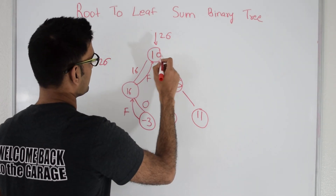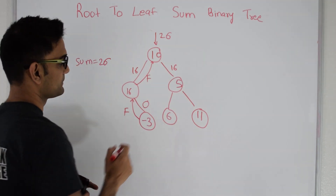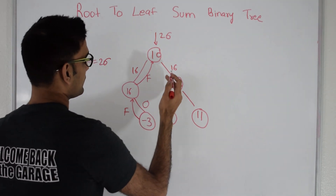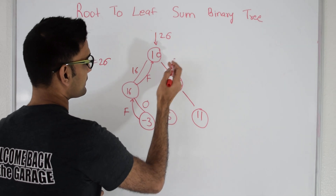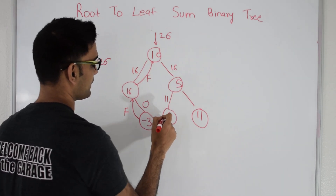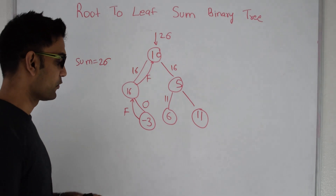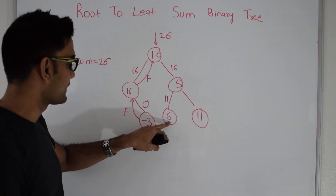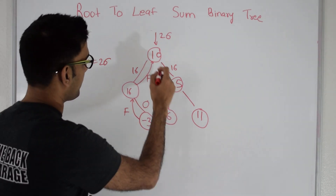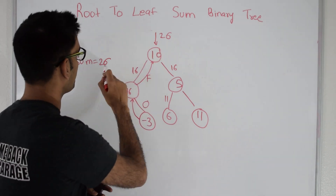So node 10 tries to find the path on its right side, passing 16 to node 5. Node 5 is not a leaf, so it separates itself from 16, leaving 11, and passes 11 to its left child, node 6. Node 6 is a leaf, but its value of 6 is not the same as 11, so the path 10, 5, 6 does not sum to 26.